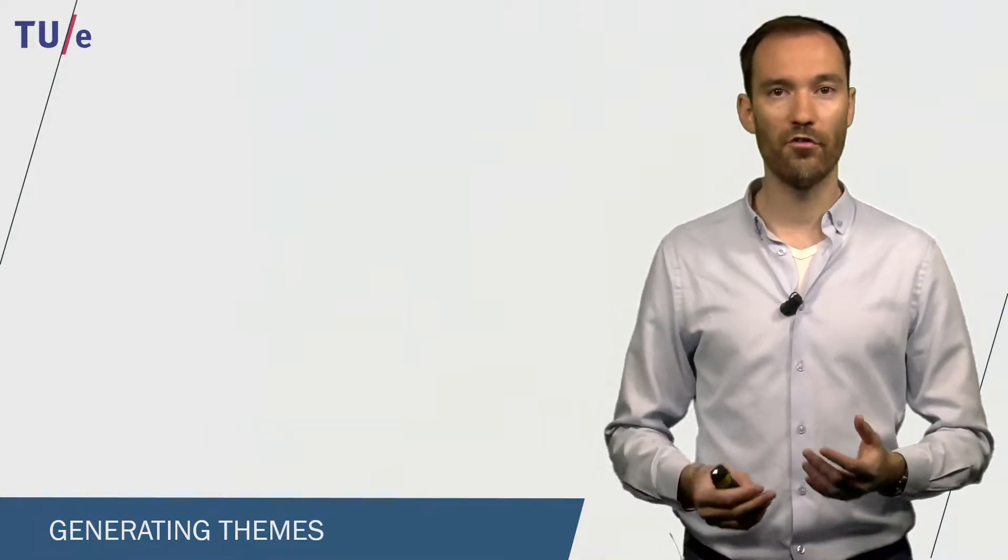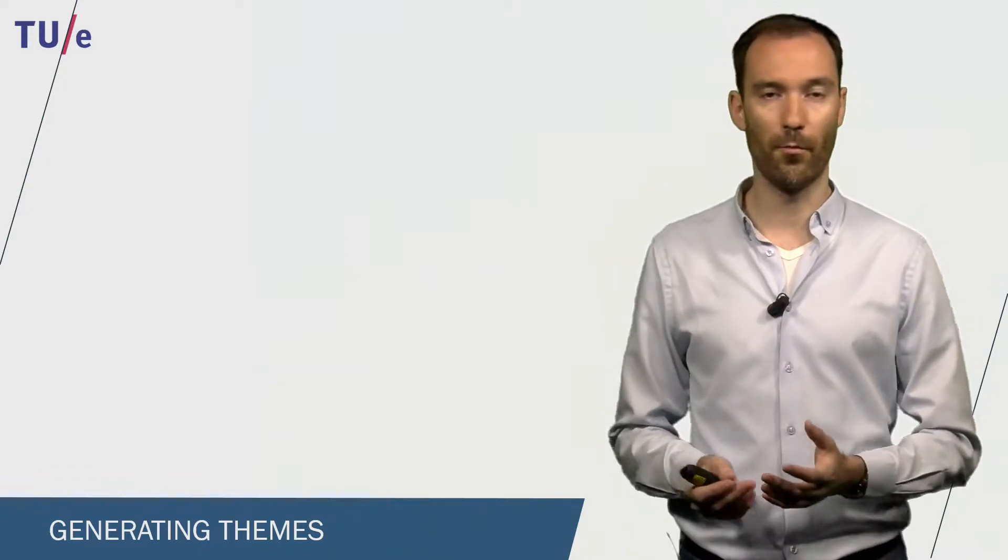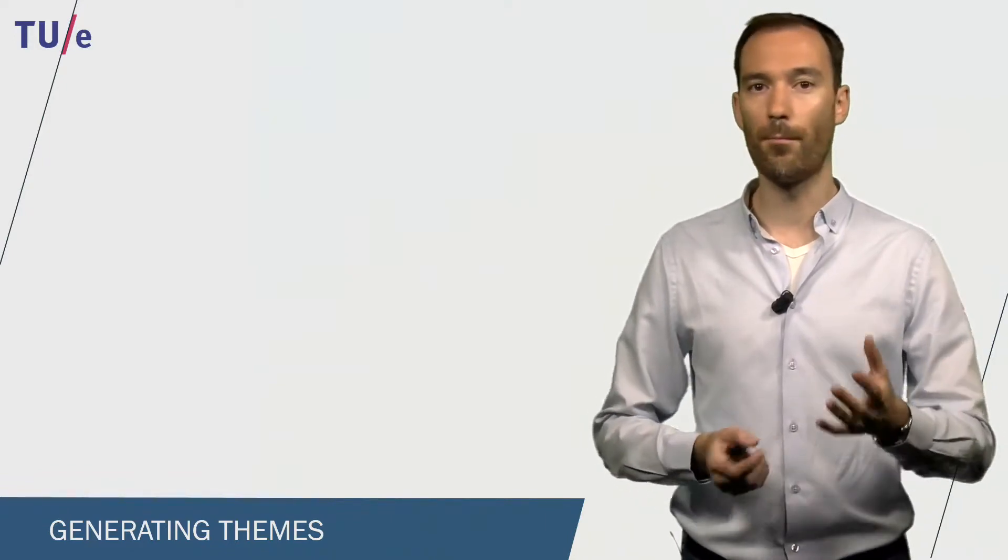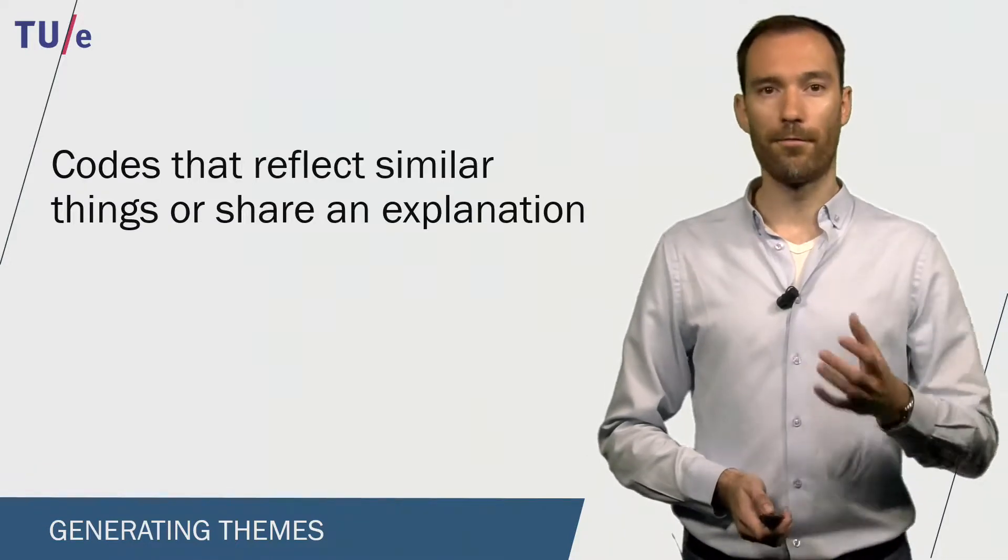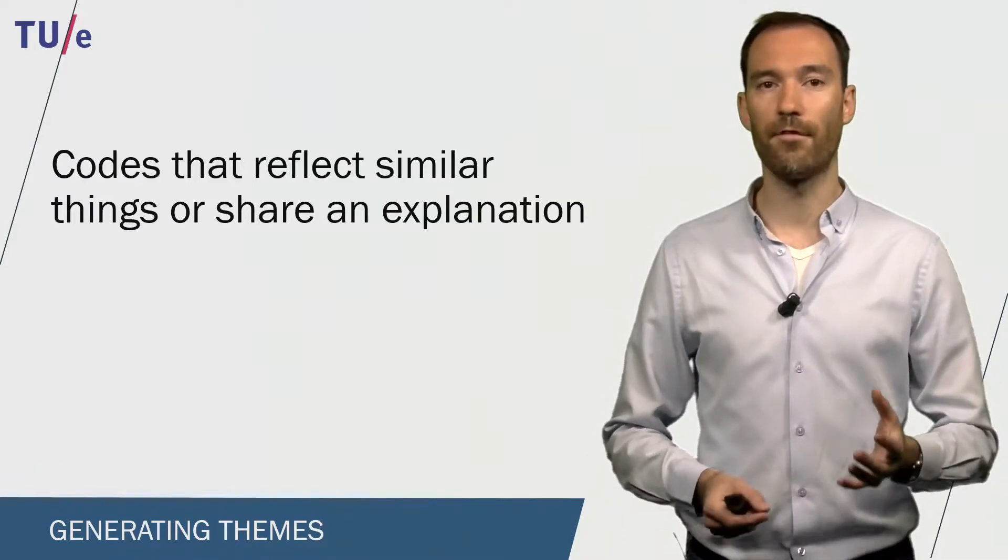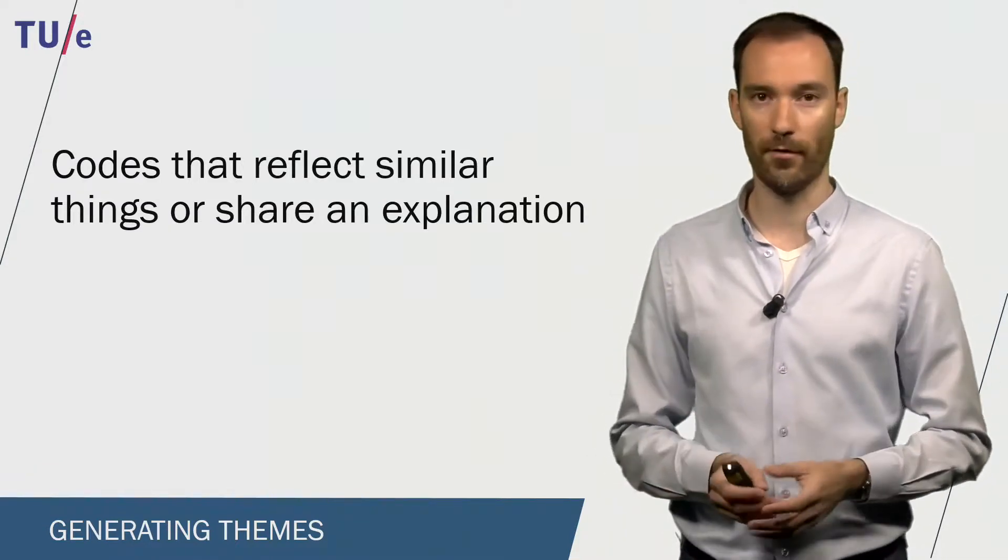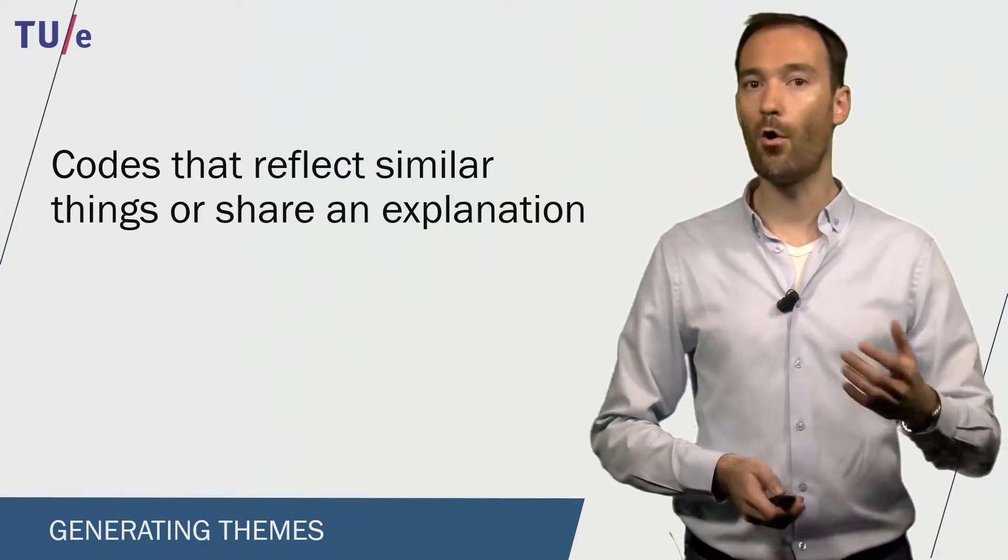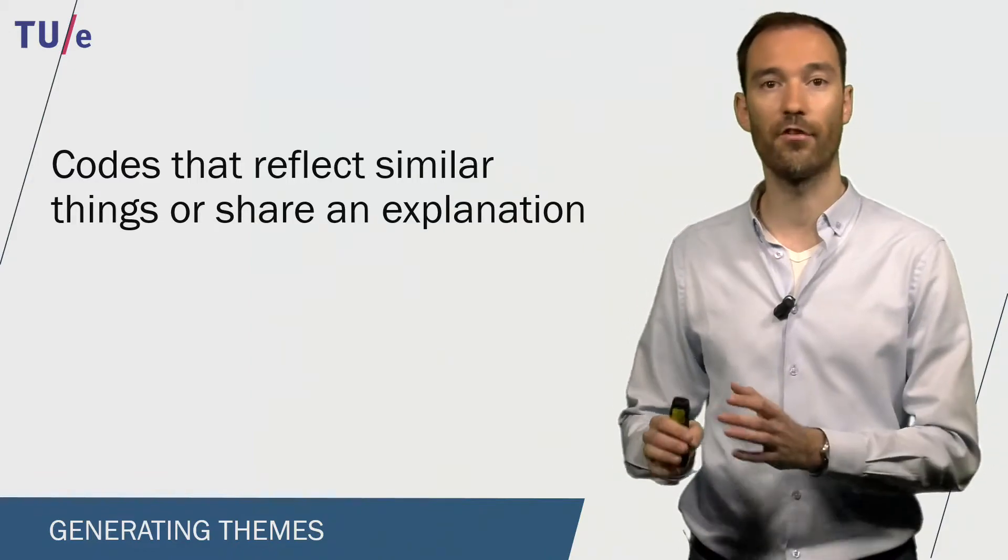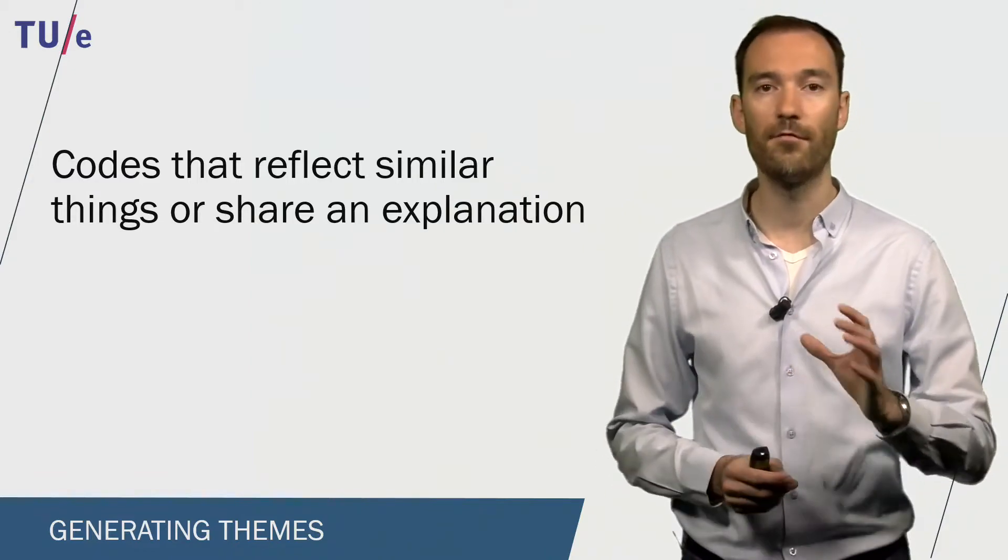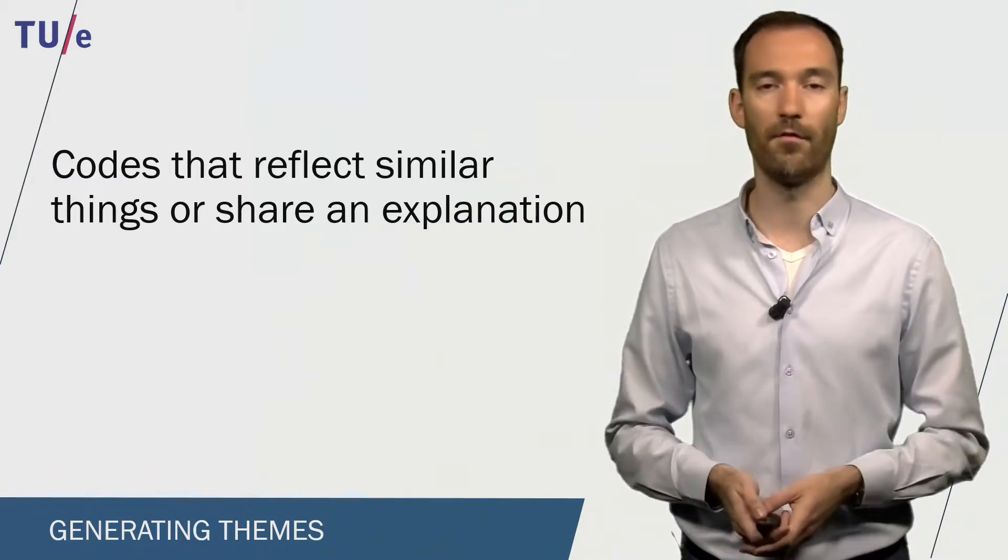The process of going from codes into themes is a very difficult one, and I am going to give you a few components that are important to understand. First, you should look at codes that reflect similar things or share an explanation. Codes that all describe positive evaluations could end up in a certain theme, or in multiple themes if there are categories of this positive evaluation.